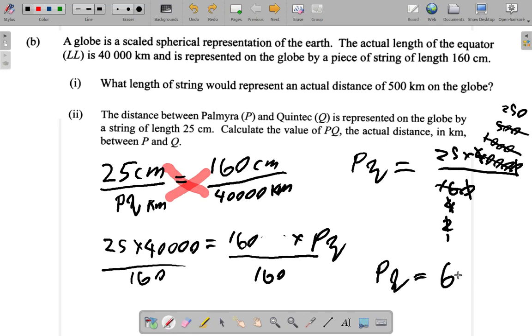So what I get for PQ is 6,250 kilometers. I believe 6,250 kilometers for the answer for this part.